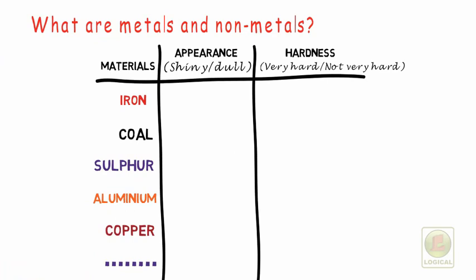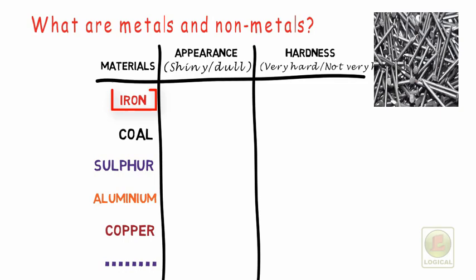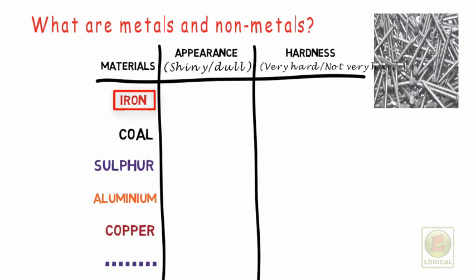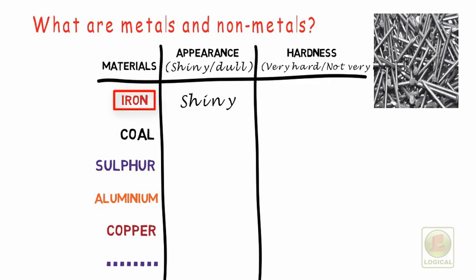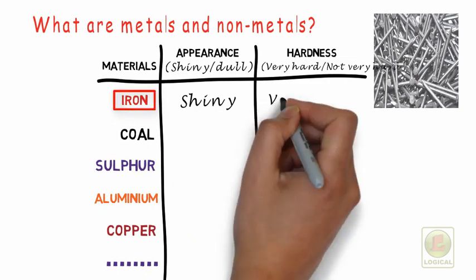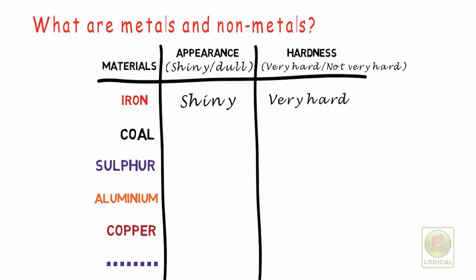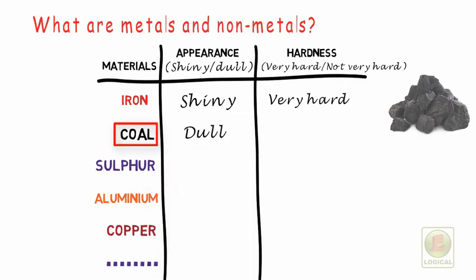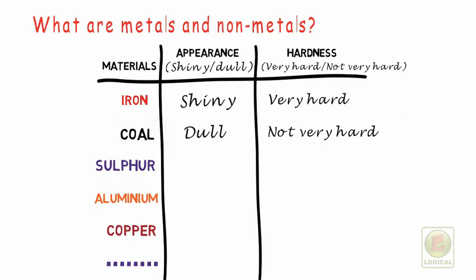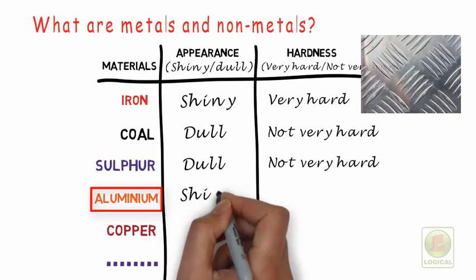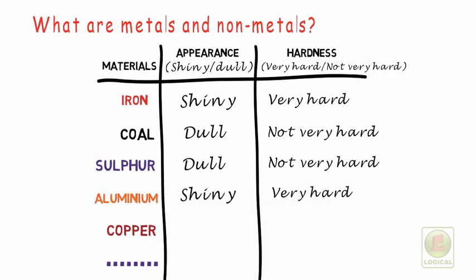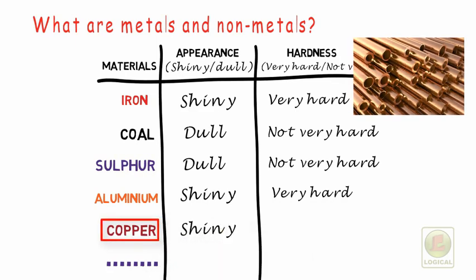First of all, let us look at iron. In appearance, it is shiny and in hardness, it is very hard. Next one is coal. Its appearance is dull and it is not very hard. Likewise, sulfur is dull and not very hard, while aluminum is shiny and very hard. Further, copper is shiny and very hard.